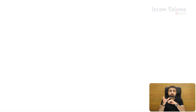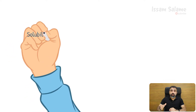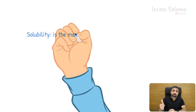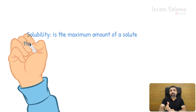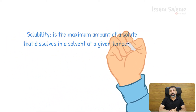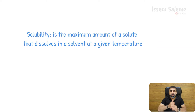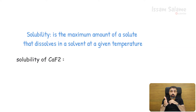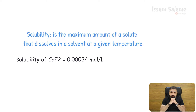Before we practice how to write the expression for the solubility product constant, let me explain what is meant by the word solubility. Solubility is the maximum amount of a solute that can dissolve in a solvent at a given temperature. For example, the solubility of calcium fluoride in water is equal to 0.00034 mol per liter at 25 degrees Celsius.